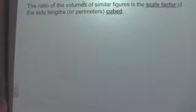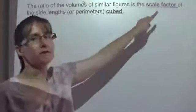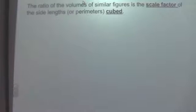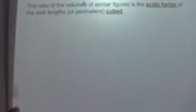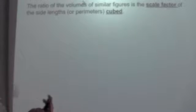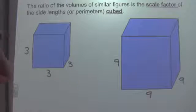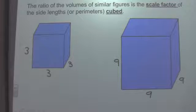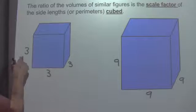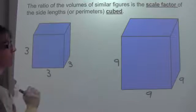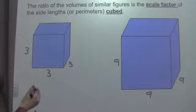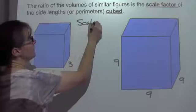We can also do this with volume. The ratio of the volumes of similar figures is going to be your scale factor of the side lengths or perimeters cubed. A side length is 3 on this particular cube and 9 on this particular cube. That means I have a scale factor of 3.